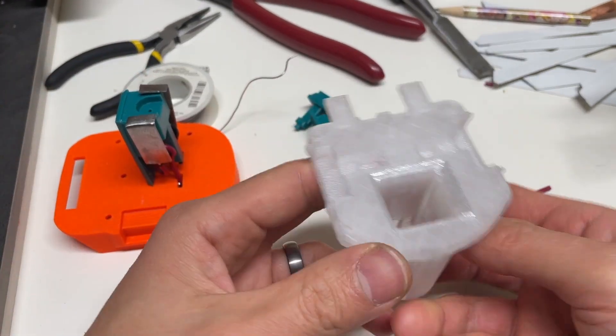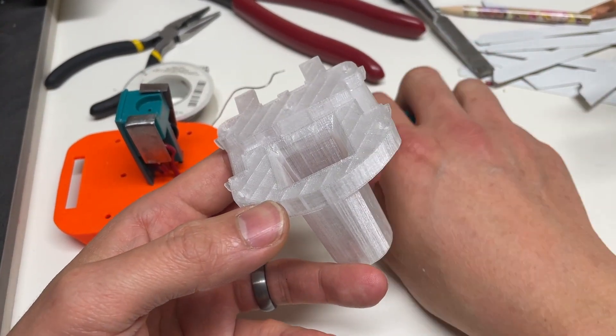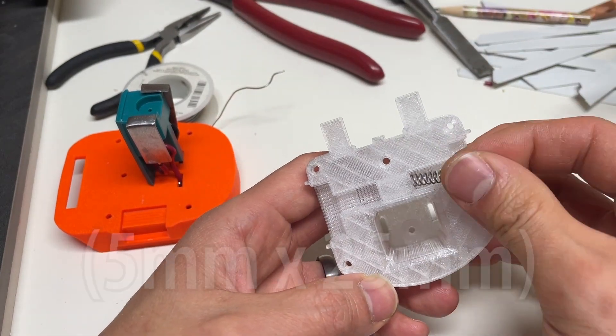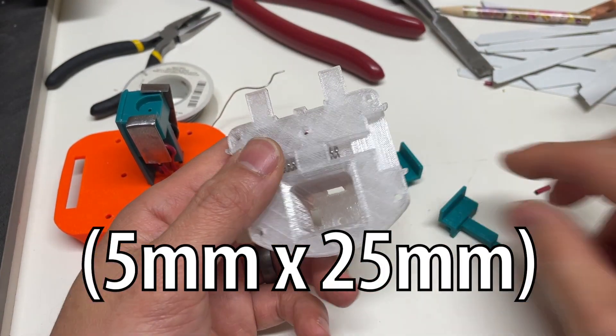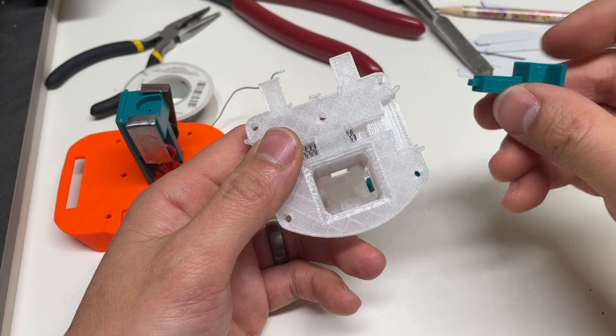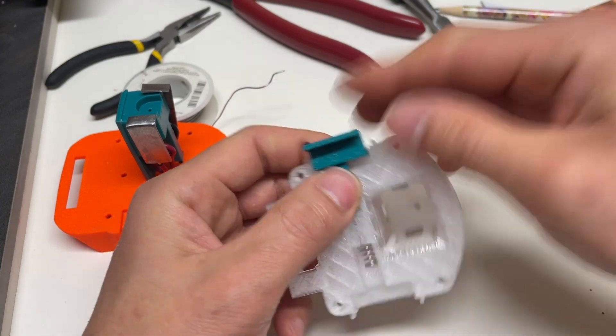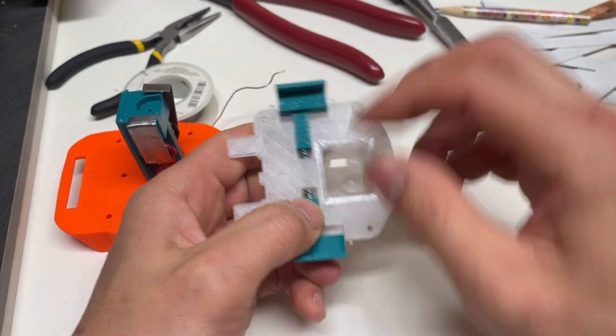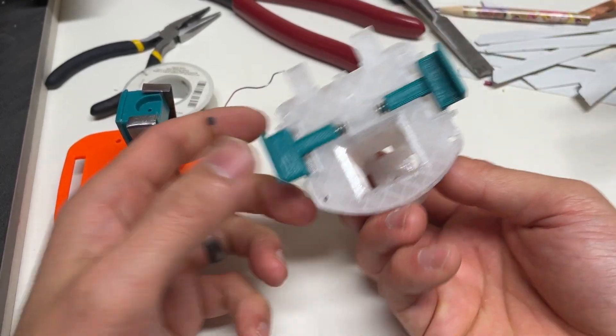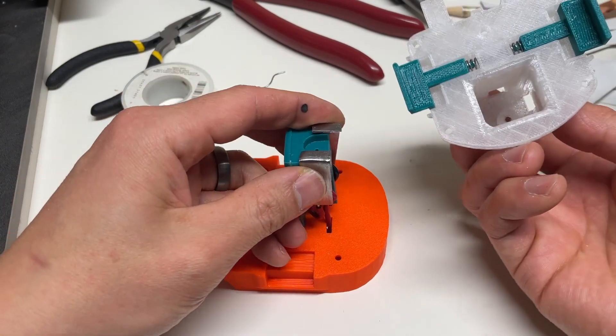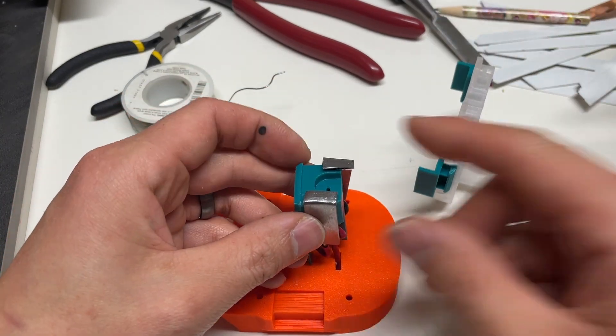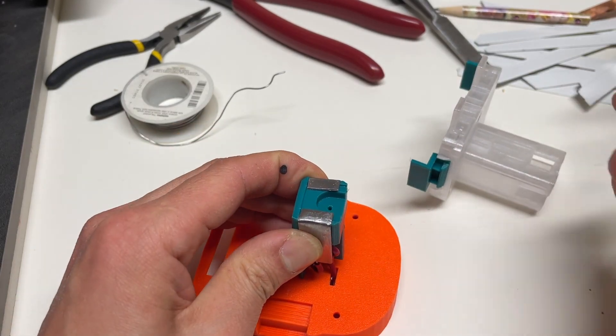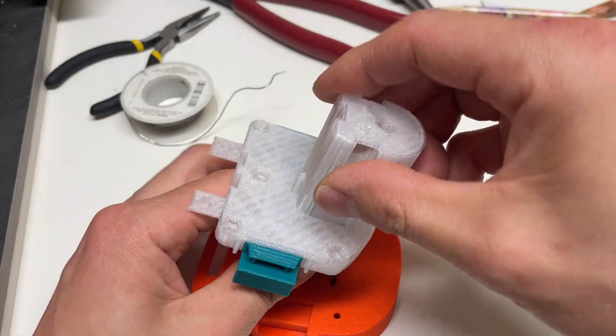But first we need to add in our clips. And first you want to put your spring in. And then the clips. Make sure they operate correctly. Make sure the contacts are where you want them to be. And slide this through.